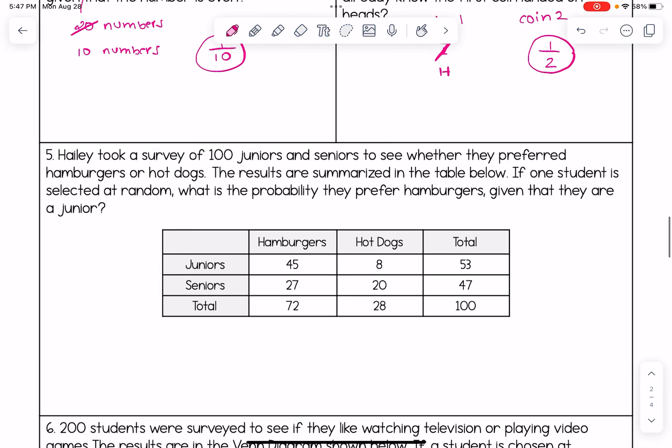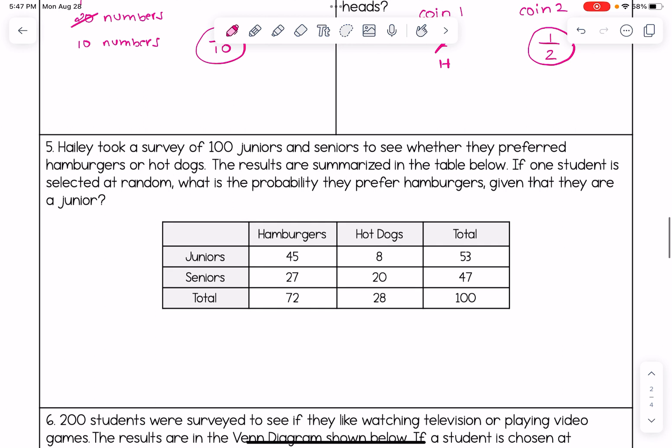For number five, we're going to now look at a two-way frequency table. Haley took a survey of 100 juniors and seniors to see whether they preferred hamburgers or hot dogs. If one student is selected at random, what's the probability they prefer hamburgers given they are a junior? Let's just go over how to read the table. Going horizontally, there's the junior row. 45 juniors picked hamburgers as their preference. Eight juniors picked hot dogs, and there were a total of 53 juniors surveyed.